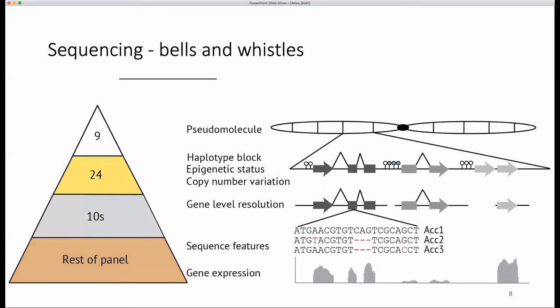Additional bells and whistles could be added, such as the epigenetic status of gold level accessions, shown here with methylated sites indicated by blue lollipops, and this could be combined with RNA-seq data for all the accessions at bronze level to gain insight into the regulation of gene expression.